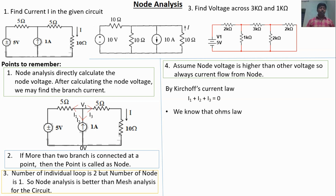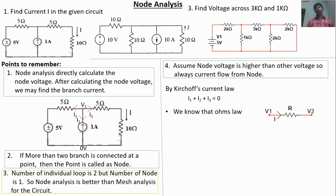We know Ohm's law. If V1 is the voltage at one end of a resistor and V2 is the voltage at the other end, the voltage across R is not V1, not V2 — it is V1 minus V2, the voltage difference. By Ohm's law, current I equals the voltage across the element divided by R, so I equals (V1 minus V2) divided by R.